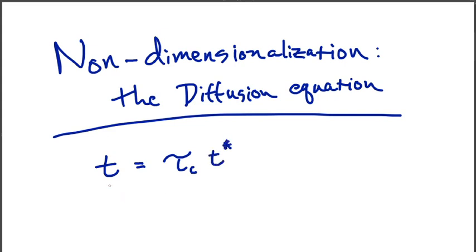So here's our dimensional time, let's say seconds. And then our non-dimensional time, which is just some number, is over here, indicated with the asterisks. So non-dimensional is here, with tau c, our characteristic time.